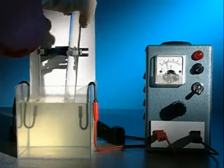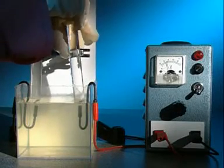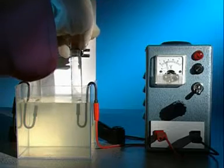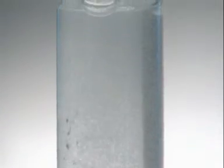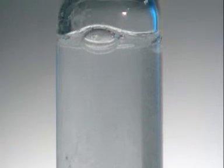To collect the gases, a test tube full of sodium chloride solution is placed over each electrode. Gas displaces the solution and collects in the top of the tube.